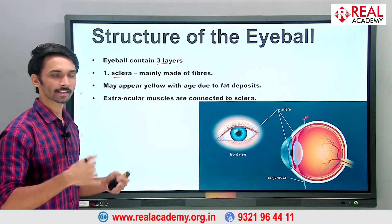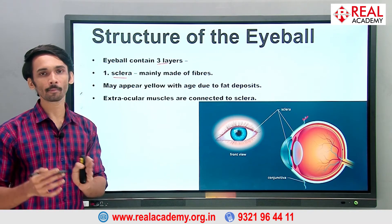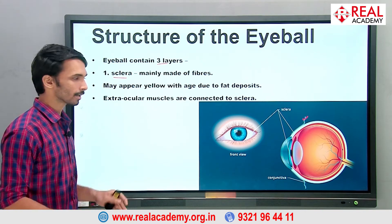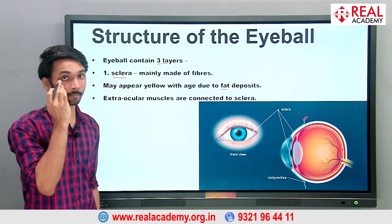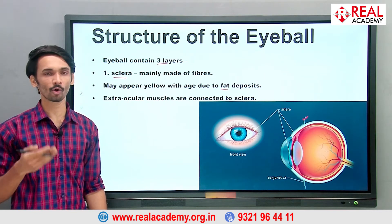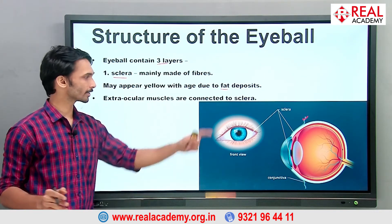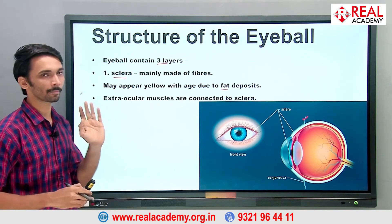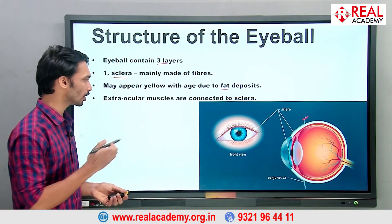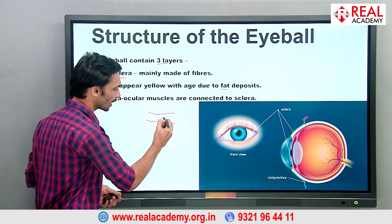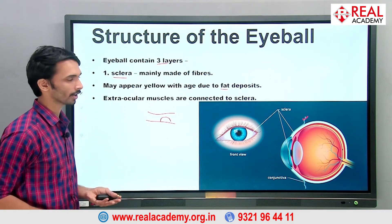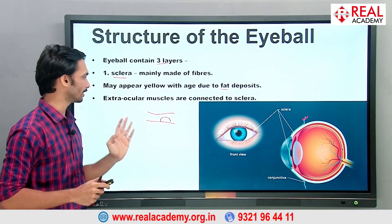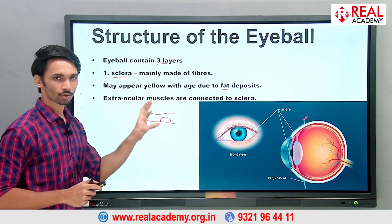As you age, your energy levels reduce. If you eat fatty food, fat can be deposited in the sclera, making it turn somewhat yellow. This is not jaundice — it's an age-related condition where fat deposits occur, similar to how fat deposits build up inside blood vessels causing blockages. Those fats can deposit in the conjunctiva too, causing it to turn yellow in color.